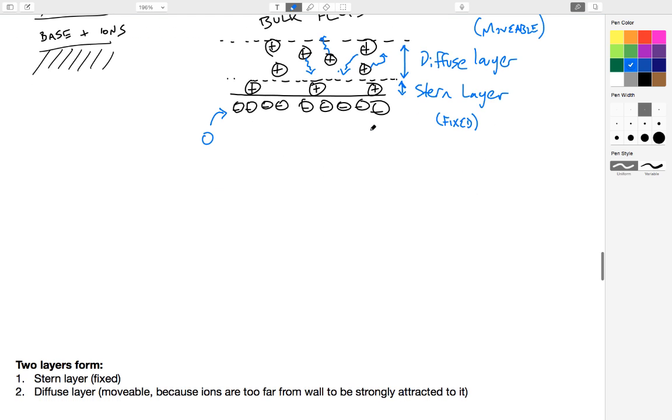So, take-home messages. There's two layers that form at the surface when you have ions in solution and at a basic pH. In other words, when you have a significant amount of negative charge at your surface, at the wall of your channel. The Stern layer, which is fixed, and the diffuse layer, which is movable.